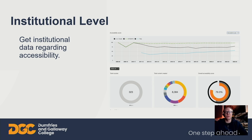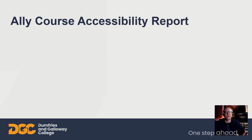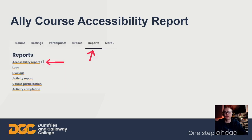We would like you as lecturers to take responsibility for your own materials. If there are obvious issues in your course, Ally will guide you through the process of fixing them. To get your accessibility report, go to the reports tab in your course and then accessibility report. If you've got a device with you, you can do this as we go along and check out your own scores. Feel free to pause the video if you want to check your own scores at any time.